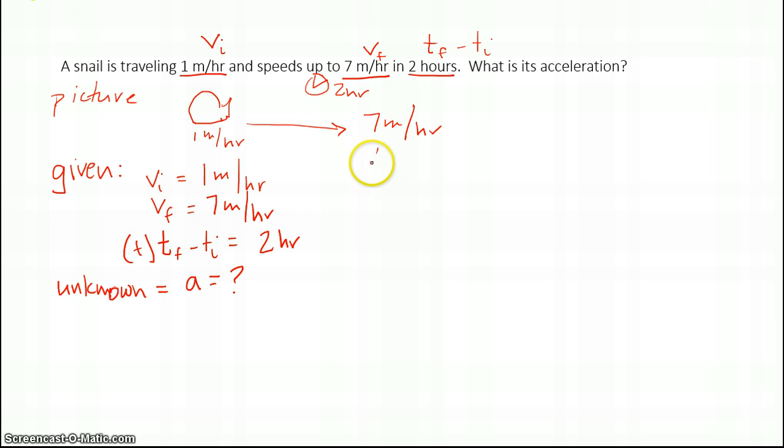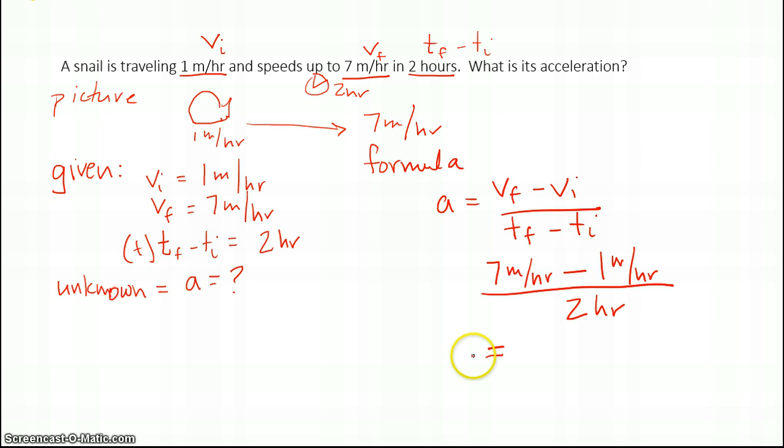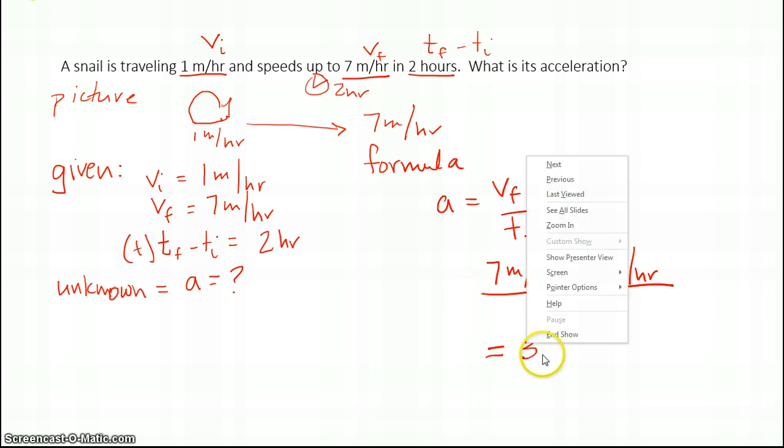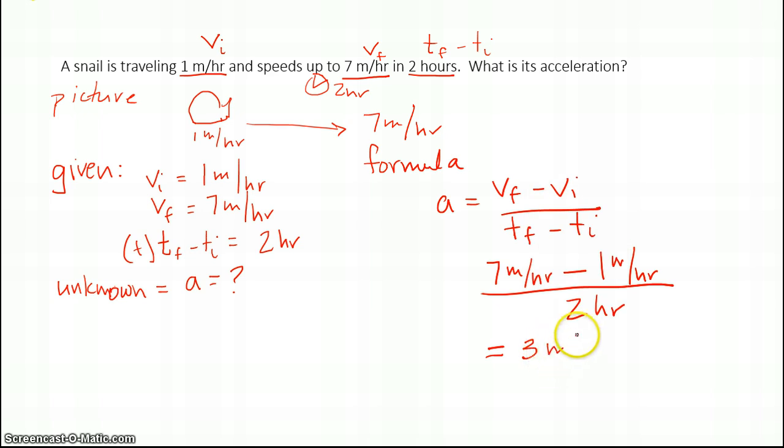Then I have my formula. I know that A equals Vf minus Vi over Tf minus Ti. Let's just plug in numbers. Vf is seven meters per hour, minus my Vi is one meter per hour, and this all takes place, so my Tf minus Ti all is one number in a two-hour period. If I do my math, that tells me that my acceleration is three meters per hour squared.